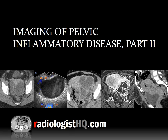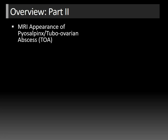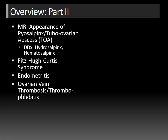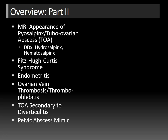This is Imaging of Pelvic Inflammatory Disease, Part 2. I'm Dr. Dan Kovel. In Part 2, I'll discuss the MRI appearance of pyosalpinx and tubovarian abscess, and how to differentiate that from hydrosalpinx and hematosalpinx. I'll talk about Fitzhugh-Curtis syndrome, go into more detail about endometritis, discuss how to differentiate ovarian vein thrombosis from thrombophlebitis, an unusual cause of tubovarian abscess secondary to diverticulitis, and an important pelvic abscess mimic.